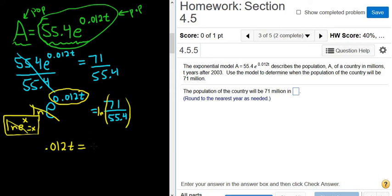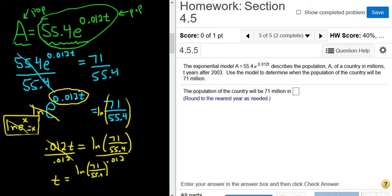This equals ln of 71 over 55.4. Then you divide by 0.012, so T equals ln of 71 over 55.4 divided by 0.012. I'm going to put this in the calculator.